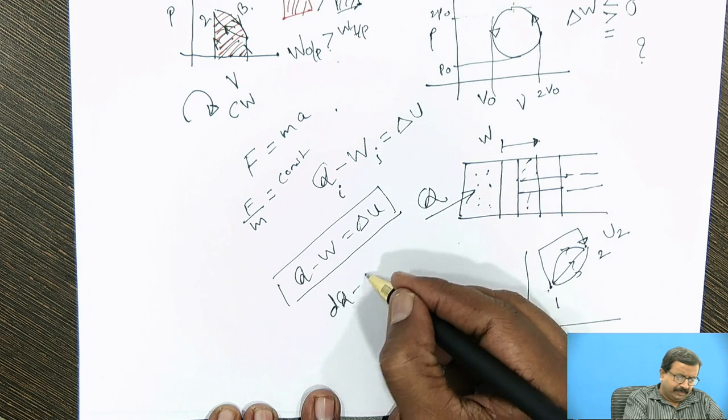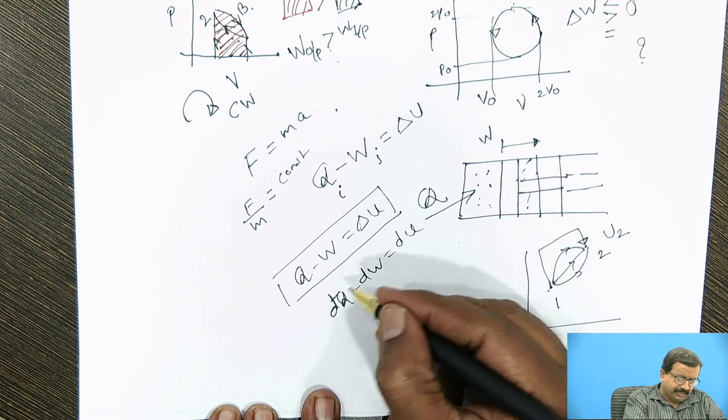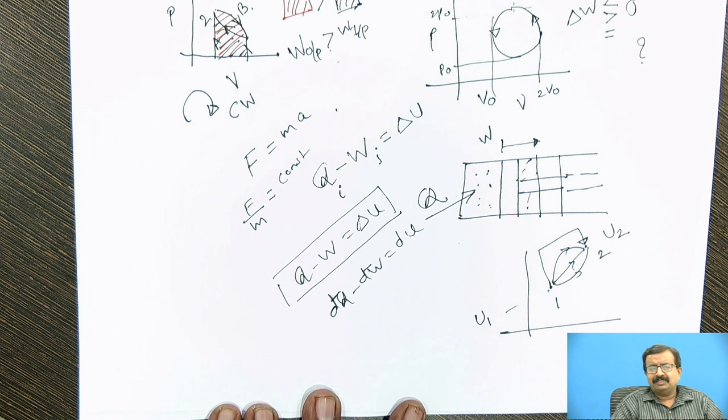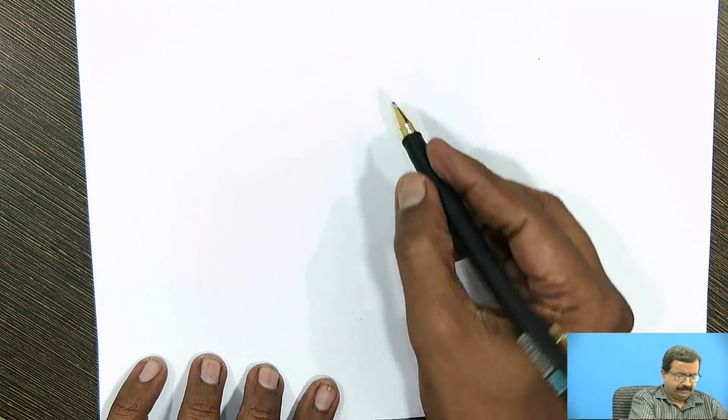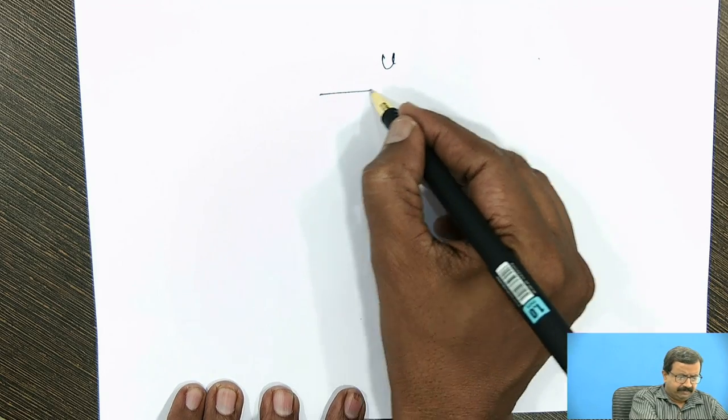And this is nothing but the first law statement that we get in this form. If I want to write in differential form, I will write dq minus dw is equal to du. Actually this d and d should be given some hyphenation because this is not an exact differential. In calculus, du on the right side is an exact differential but dq and dw are not exact because we call those properties exact which are path independent. So du is a point function. Now you may wonder what is the concept of internal energy and how it is to be measured? Can we measure the internal energy? No. We can measure only the difference. We can measure the difference in internal energy.